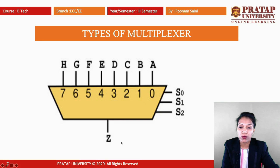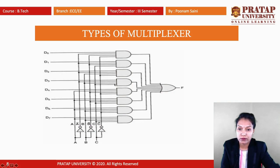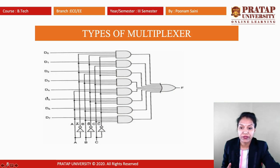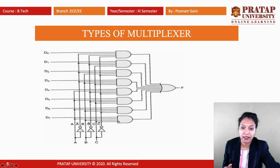In the 8-to-1 multiplexer, 8 AND gates are constructed with 1 OR gate and 3 select lines — S0, S1, and S2. The circuit has inputs D0 through D7, and the three select lines A, B, C each pass through NOT gates to produce A-bar, B-bar, and C-bar. These combine through 8 AND gates and 1 OR gate to produce the final output F.